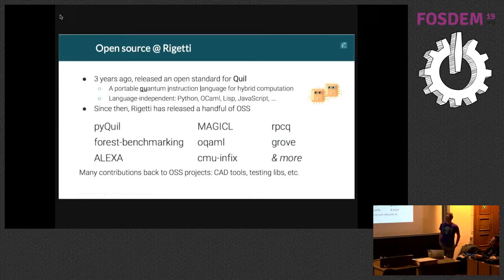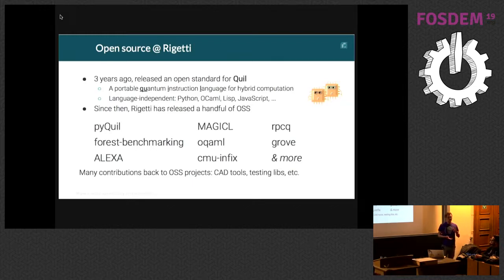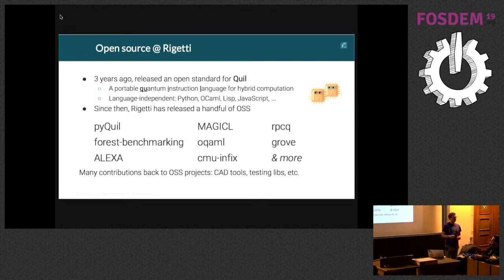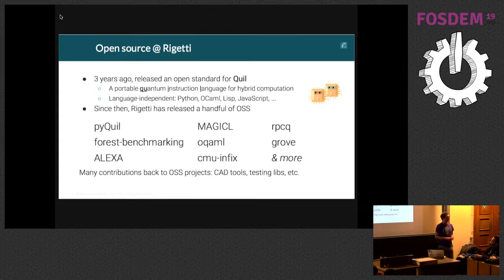Pretty early on at Rigetti — I joined when it was around 20 people — we were very interested in openness. I credit Will Zhang a lot, who planted the seed at the company to maintain openness in our ideas and software. Being in open source and open standards isn't something relatively new for us; we've been doing it for about three years. One of the big milestones was releasing an open standard for a quantum instruction language called Quil — an assembly-looking code that describes hybrid classical-quantum programs. To my surprise, we saw all these libraries popping up: somebody wrote something in Haskell to construct Quil circuits, I wrote something in Lisp, somebody else wrote something in OCaml.